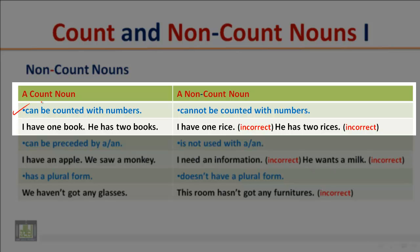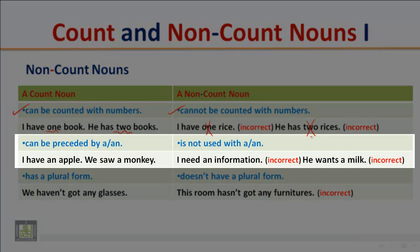A count noun can be counted with numbers. For example: 'I have one book,' 'he has two books.' The word 'book' is a count noun — it can be counted with numbers. An uncount noun cannot be counted with numbers, so it is wrong to say 'I have one rice' or 'he has two rices.' The word 'rice' is an uncount noun.